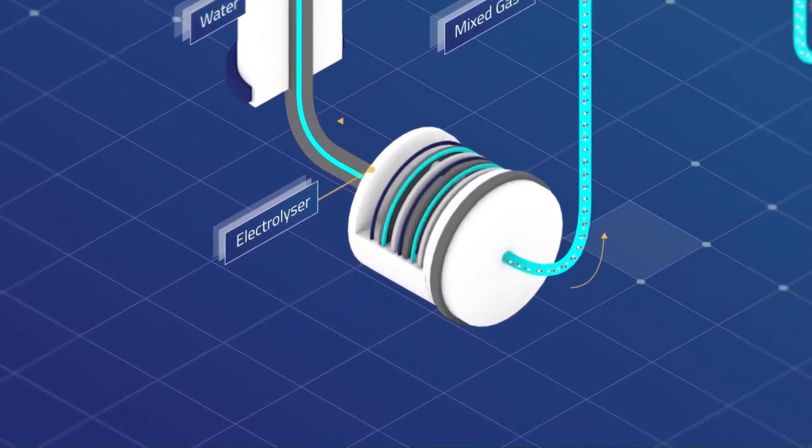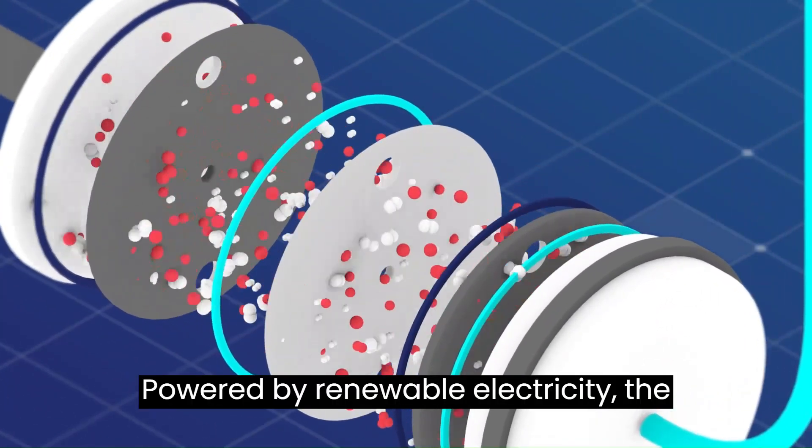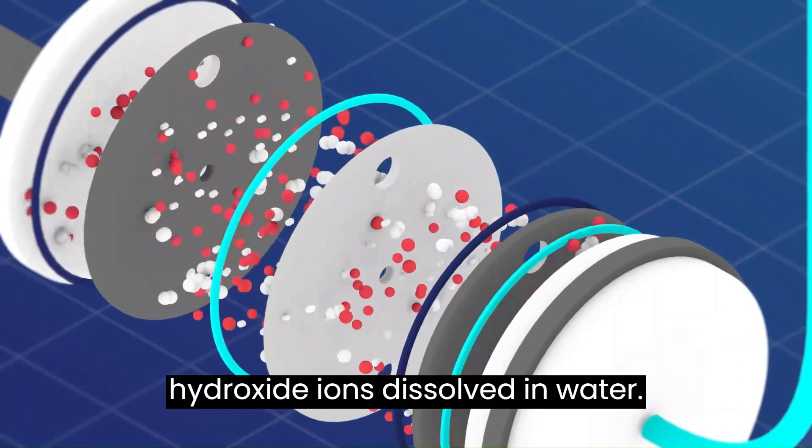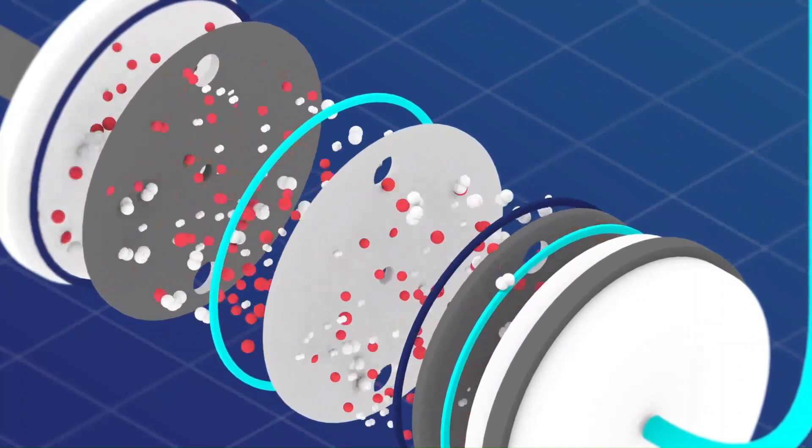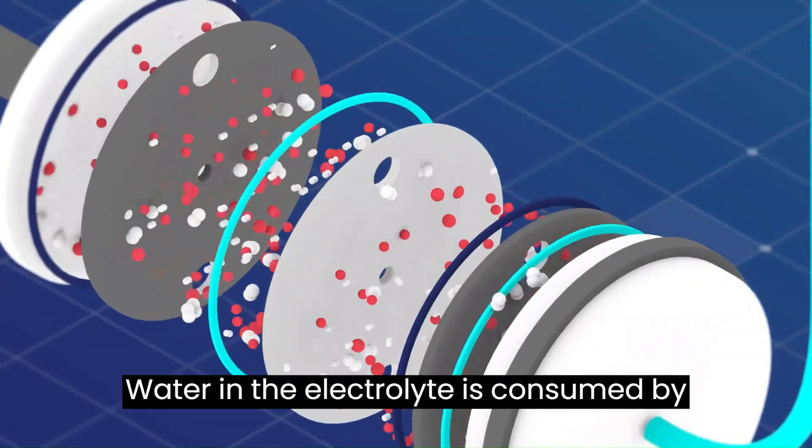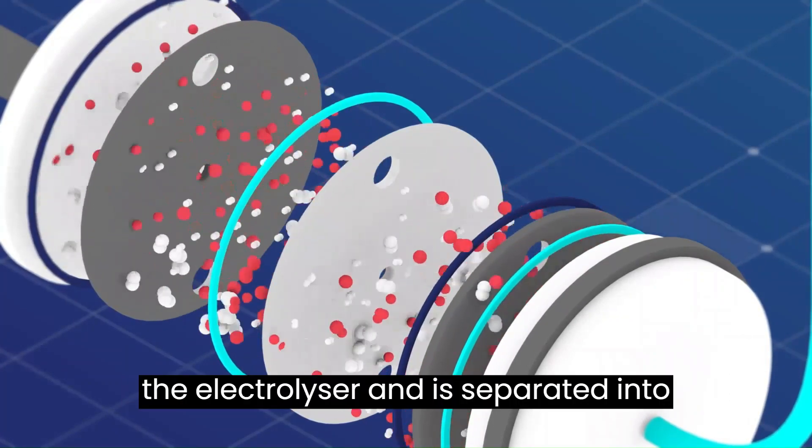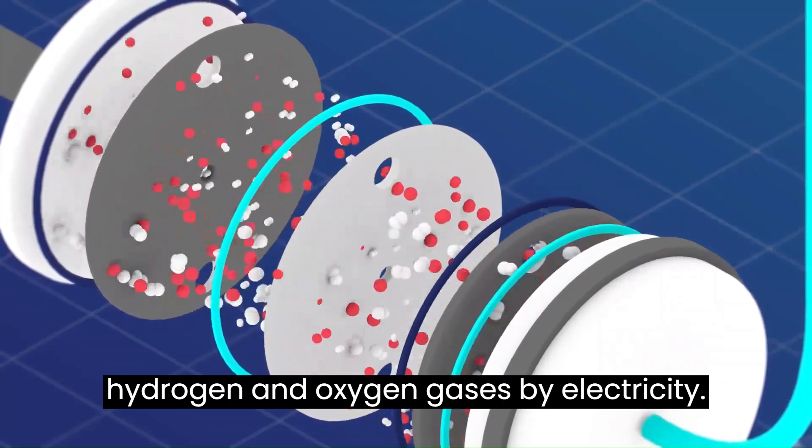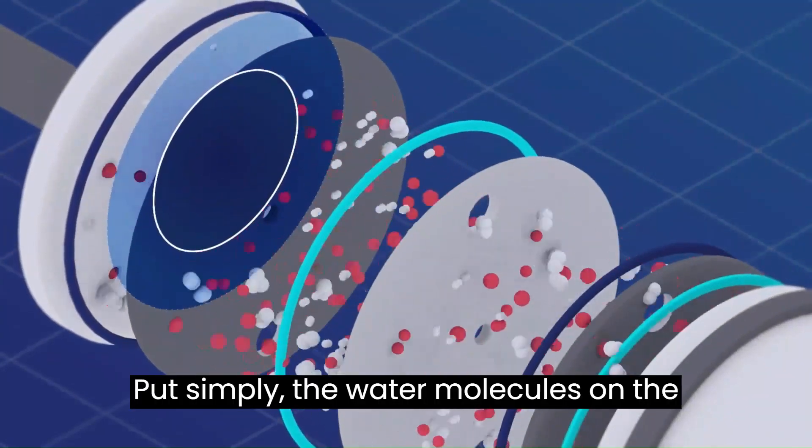Powered by renewable electricity, the stack is fed electrolyte that contains hydroxide ions dissolved in water. Water in the electrolyte is consumed by the electrolyzer and is separated into hydrogen and oxygen gases by electricity. Put simply, the water molecules are split apart.